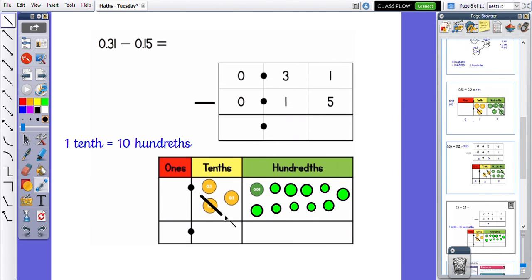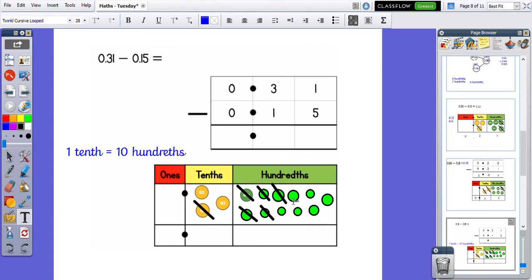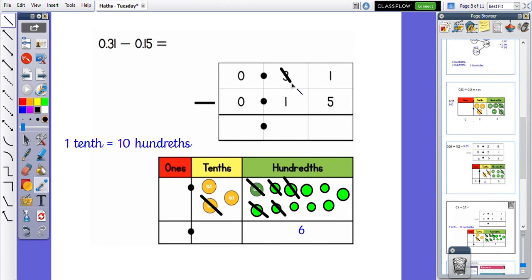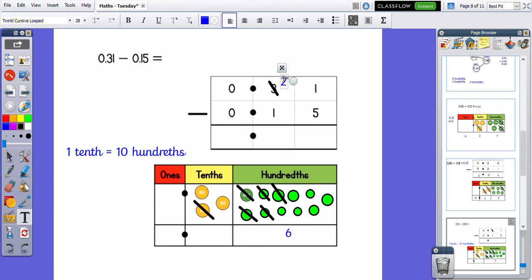I've used one of the tenths, brought it over to the hundredths, which has given me 10 extra hundredths to work with. Now I'm going to subtract 5. I've got 1, 2, 3, 4, 5, 6 left over. So I've got 6 in my hundredths column. And then up here, it's the same as when we do non-decimal numbers. I would have to cross the 3 out, put a 2 above it, carry the 1, which would give me the 11 that I had down here. Then I would do 11 subtract 5, which would leave me with 6. So it's very similar to what we would normally do, but you can see exactly what is happening here.